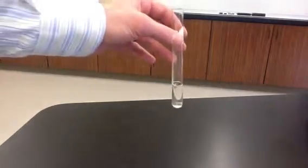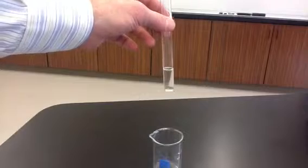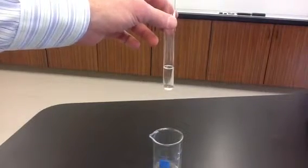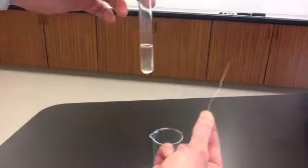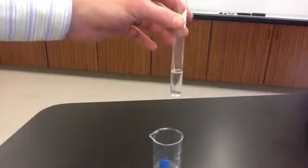Our third reaction is going to be a reaction between silver nitrate. So this is silver nitrate. It's a colorless solution. Silver nitrate is soluble in water. And then we're going to add to that a piece of copper metal. So this is a piece of copper wire. And I'm going to drop the copper wire into the silver nitrate.